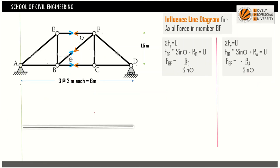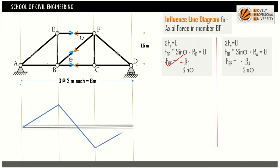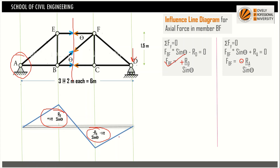Drawing the ILD for member BF: from A to B, the ILD follows RD / sinθ (positive, drawn above baseline). From C to D, the ILD follows −RA / sinθ (negative, drawn below baseline). All ordinates are divided by sinθ. The positive portion indicates tension and the negative portion indicates compression in the diagonal member.